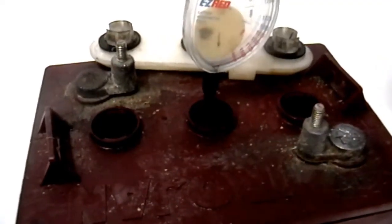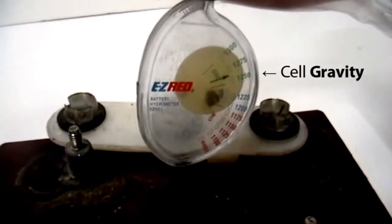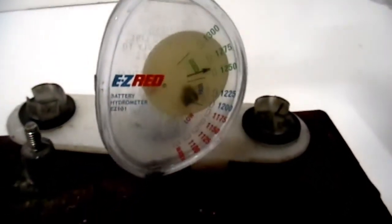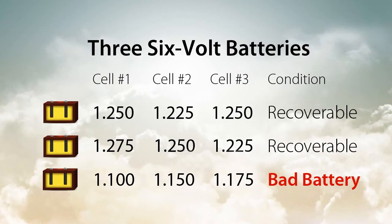Read the dial to get the specific gravity for that cell. Measure and record the specific gravity of each battery cell. Compare the specific gravity readings for each battery. If a battery has a difference of more than 0.05 between the cells, that battery has an open cell.